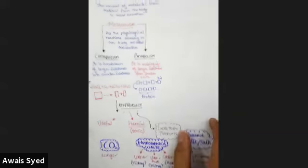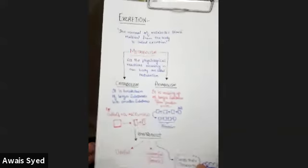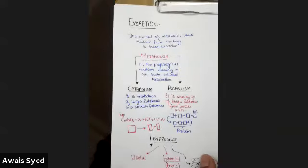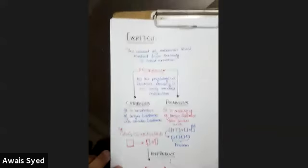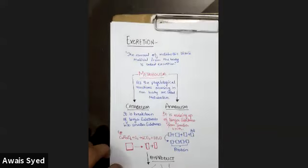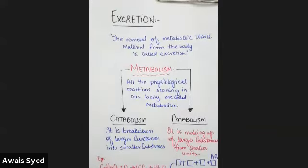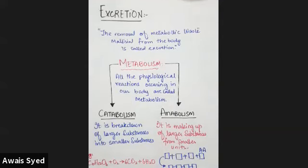Let's start from the component of excretion. Excretion is basically a chapter in which we talk about the removal of metabolic waste products. These metabolic waste products are toxic and harmful to our body, so we can't keep them in our body — we eliminate those compounds. This raises the question: what is metabolism?